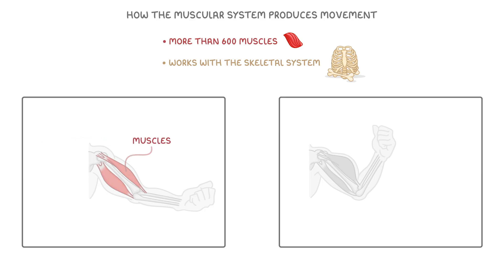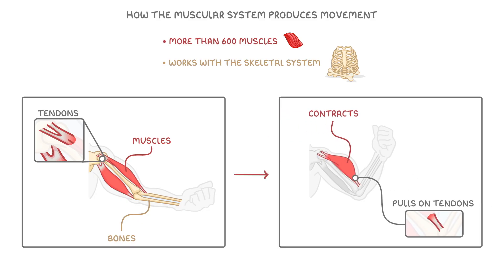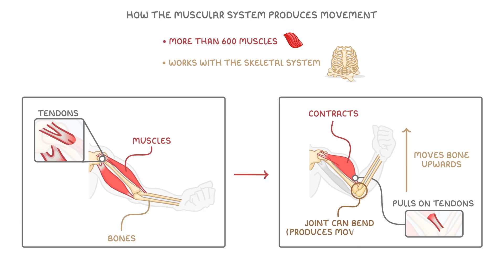Muscles that help us move, like those in the arm, are attached to bones. But rather than being directly attached, they're connected via tendons, so muscles always have this whiter region at their ends where they're attached to the bones. When the muscle contracts, it then pulls on the tendons, applying a force and moving the bone upwards like this. This means that the joint can bend, and it produces movement.